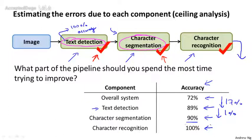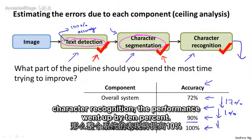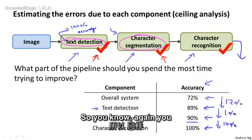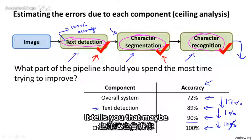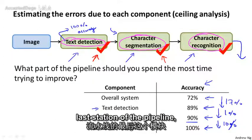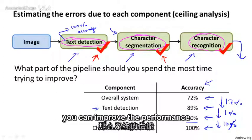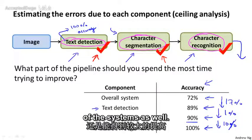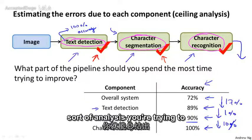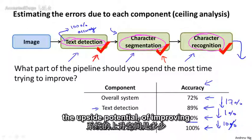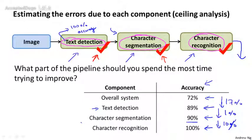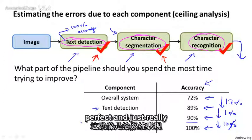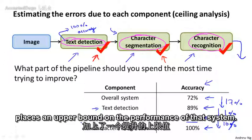Going from perfect character recognition, performance went up by 10%. You have to decide how much a 10% improvement is worth — this tells you that maybe with more effort spent on the last stage of the pipeline, you can improve the system's performance as well. Another way of thinking about this is that by going through this analysis, you're trying to figure out what is the upside potential of improving each component — how much could you possibly gain if one of these components became absolutely perfect — really placing an upper bound on performance.